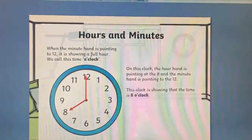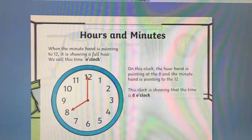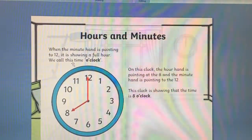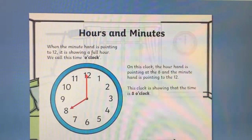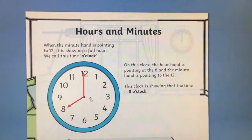When the minute hand is pointing to 12, it is showing a full hour. We call this time o'clock. On this clock, the hour hand is pointing to 8 and the minute hand is pointing to 12, so it is 8 o'clock.